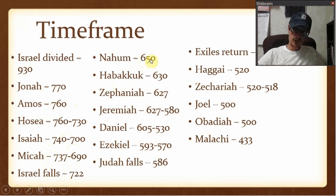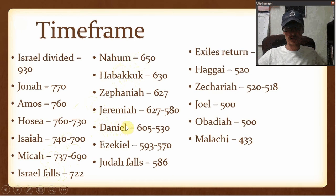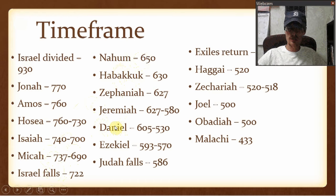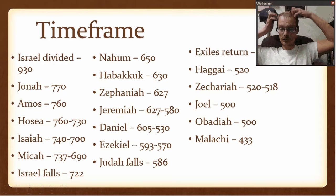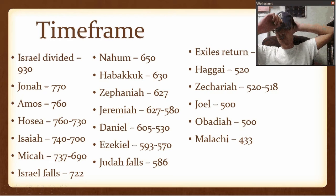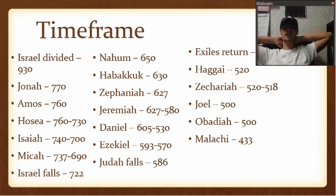Nahum was to Nineveh. Habakkuk — whatever the pronunciation — was to Judah. Now, Daniel technically prophesied after Judah had already fallen. He started right before it fell and continued after, going through until Persia took over. So first off, he prophesied for a long time. And second, his book is a lot different than all the other prophet books.